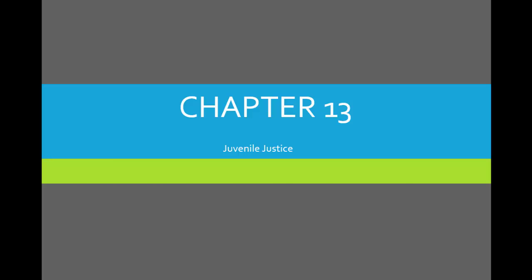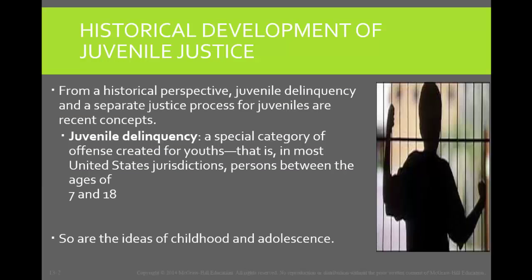If we look at things historically, we note that juveniles have not always been treated separately from their adult counterparts. It was not until 1899 that the formal juvenile justice system was developed in the United States to deal with the prosecution of juvenile delinquents. When we talk about juvenile delinquency, remember that we're focusing on those juveniles who are between the ages of 7 and 18, the age of adulthood.